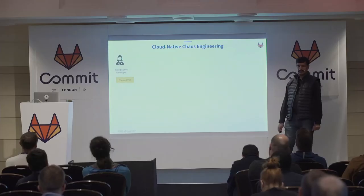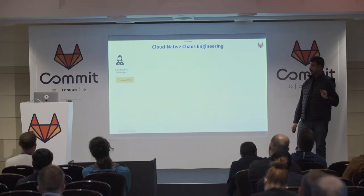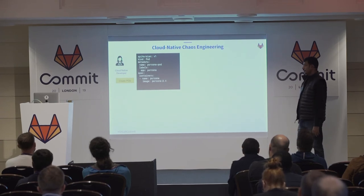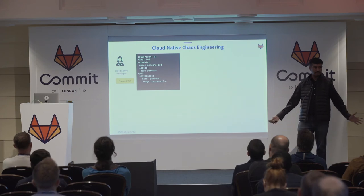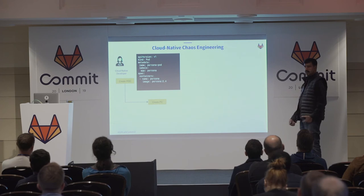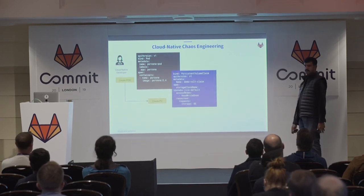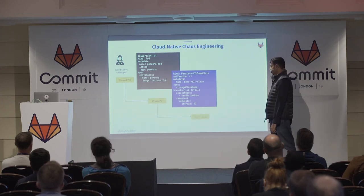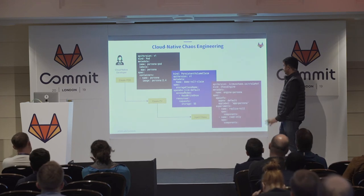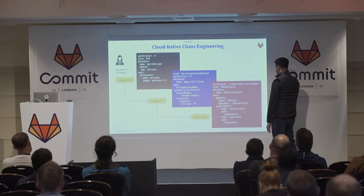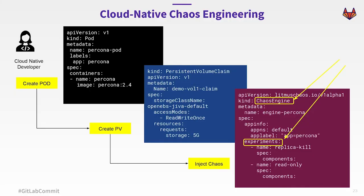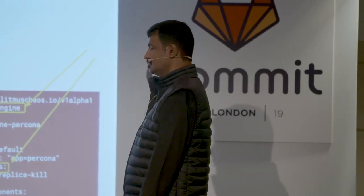In cloud native chaos engineering, it's easy to deal with chaos as a developer. As a developer, first thing I do is create a pod — it's all about creating a simple YAML file using the standard Kubernetes way. To create other Kubernetes objects, you do the same thing — to create a persistent volume, it's very simple. And to inject chaos, it's the same method: you create another kind called chaos engine and chaos experiments, and then it's all done. That's why we call it the Kubernetes-native way of injecting chaos and observing — it's built into your usual procedure as a Kubernetes developer or ops person.